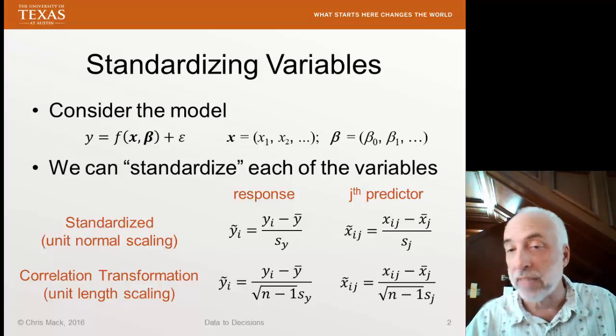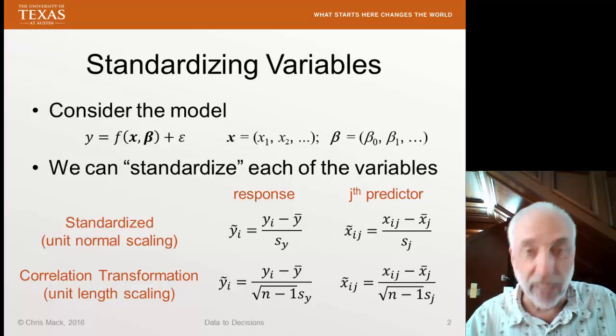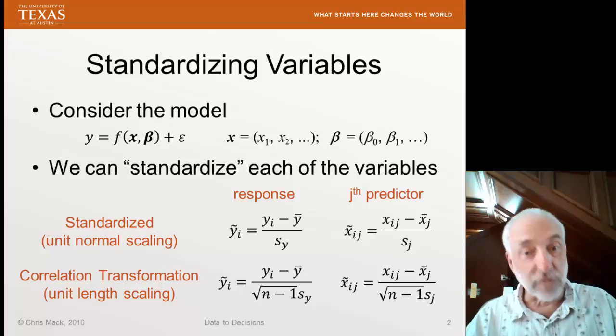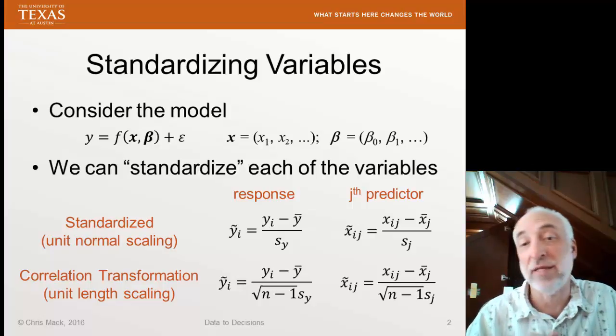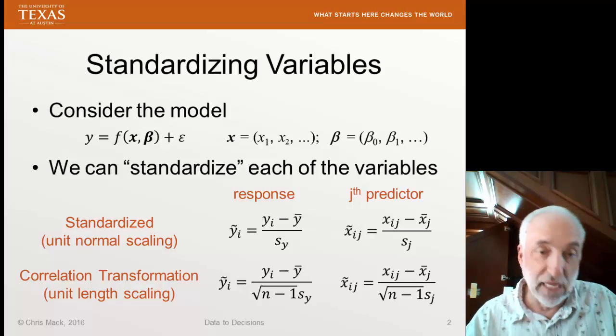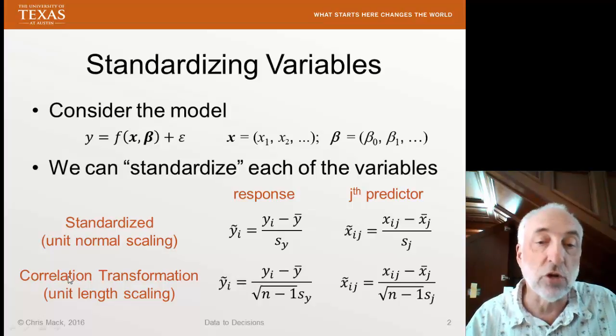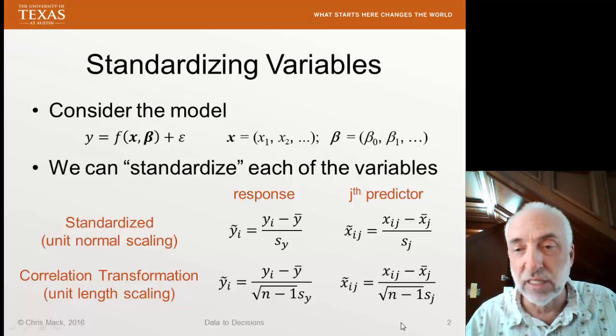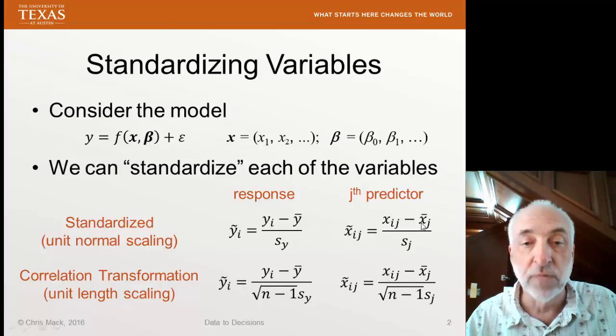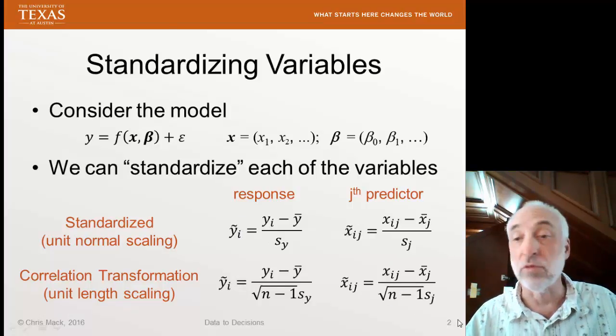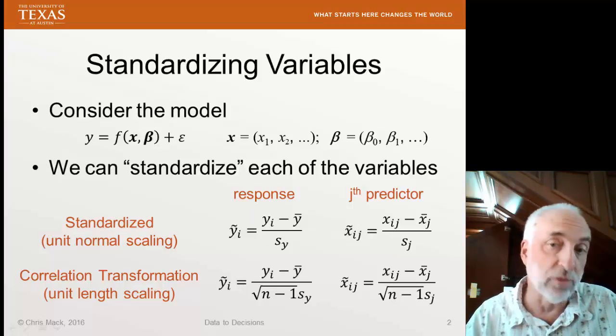Another form takes those standardized unit normal scaling standardized variables and simply divides by the square root of n minus 1. This is sometimes called a correlation transformation or unit length scaling. It's just a simple constant multiplied by each of the standardized unit normal scaling versions of those variables.